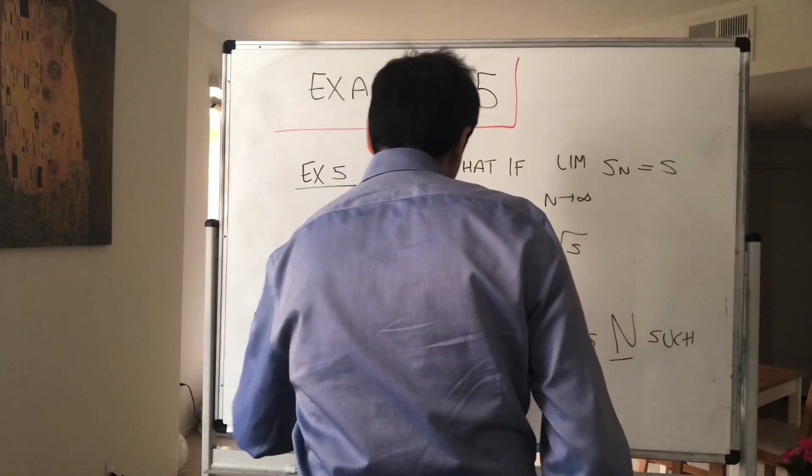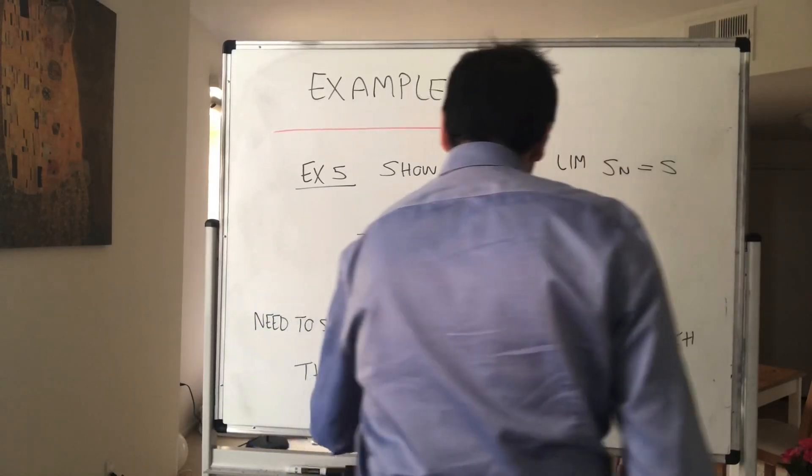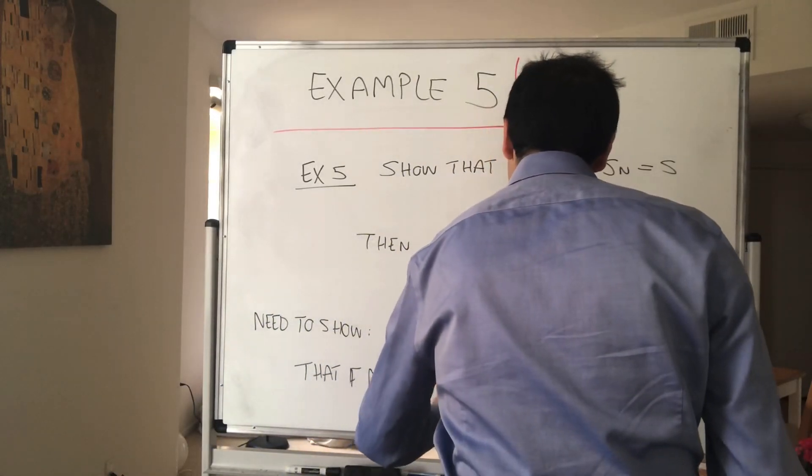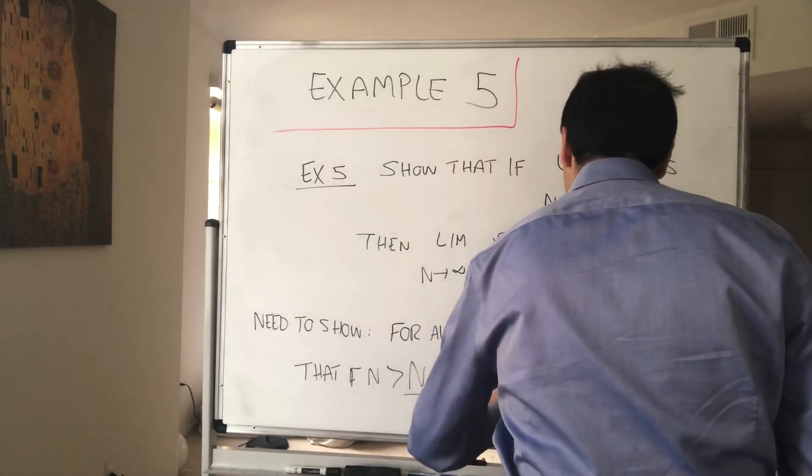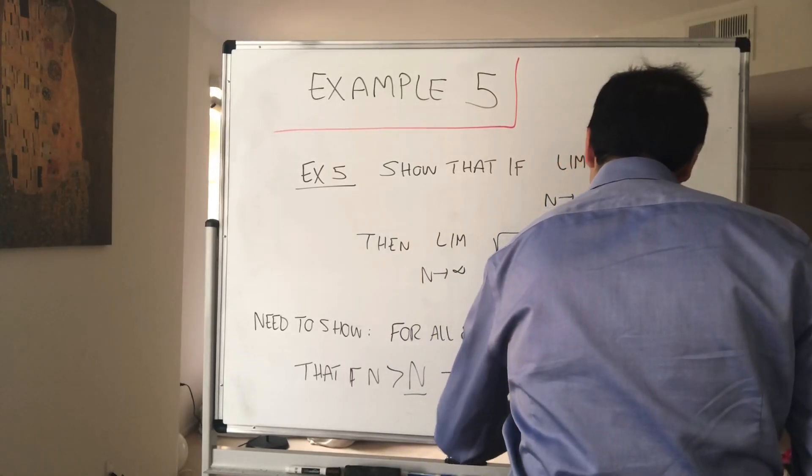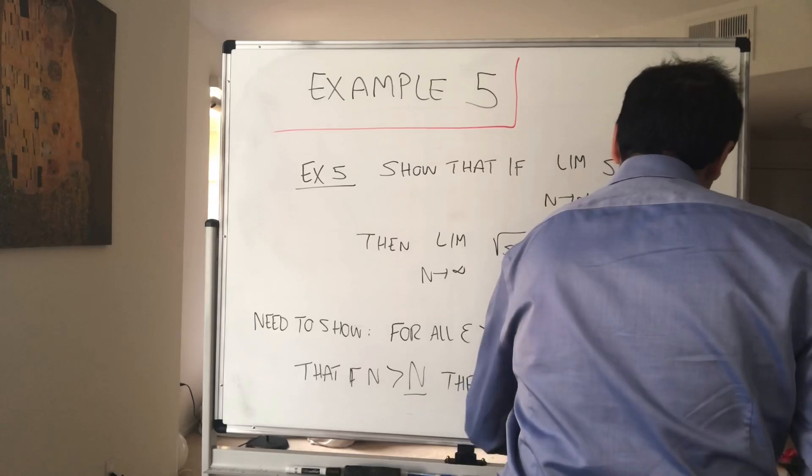if n is bigger than capital N, then the difference between the square roots is less than epsilon.